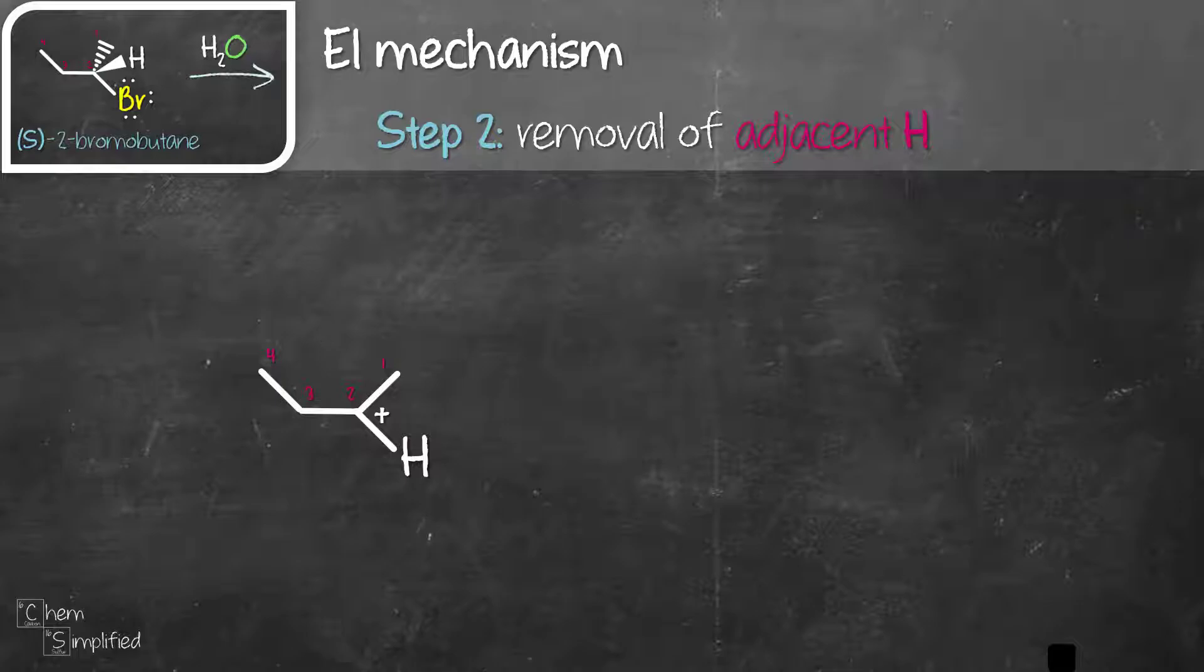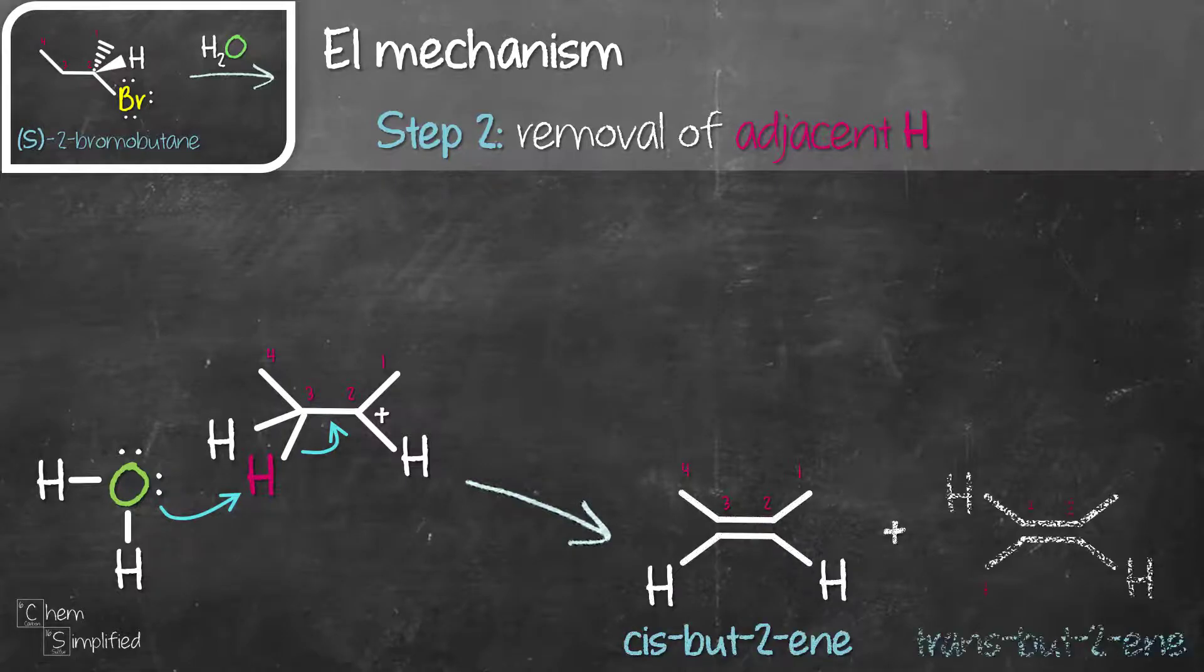The second step is deprotonation which is removal of the adjacent hydrogen by a base. We're going to use water as our base in this example and our water is going to remove a proton that is next to a carbocation. So if we look at this carbocation, at carbon 3 there are two hydrogens and let's just remove one of it.